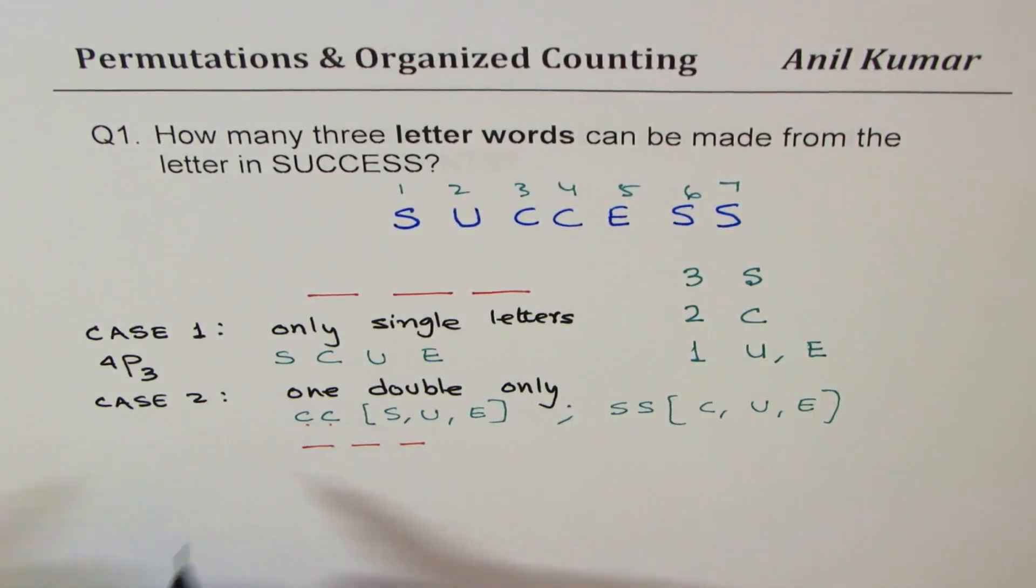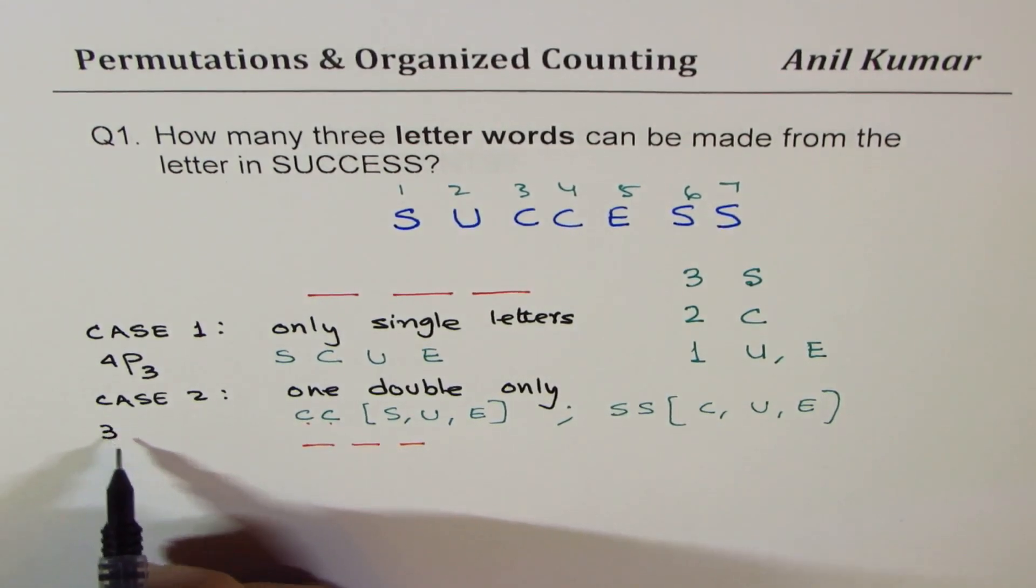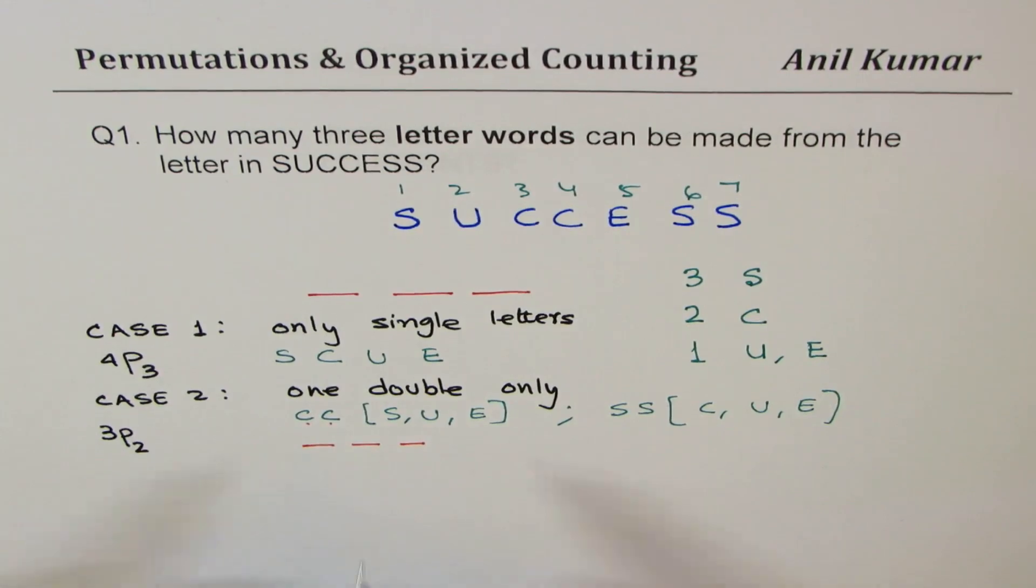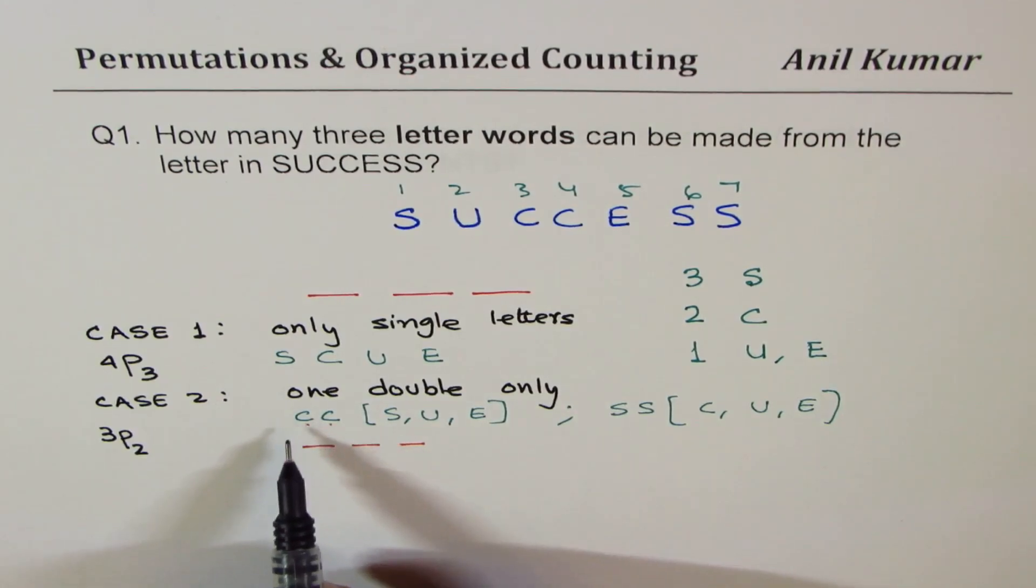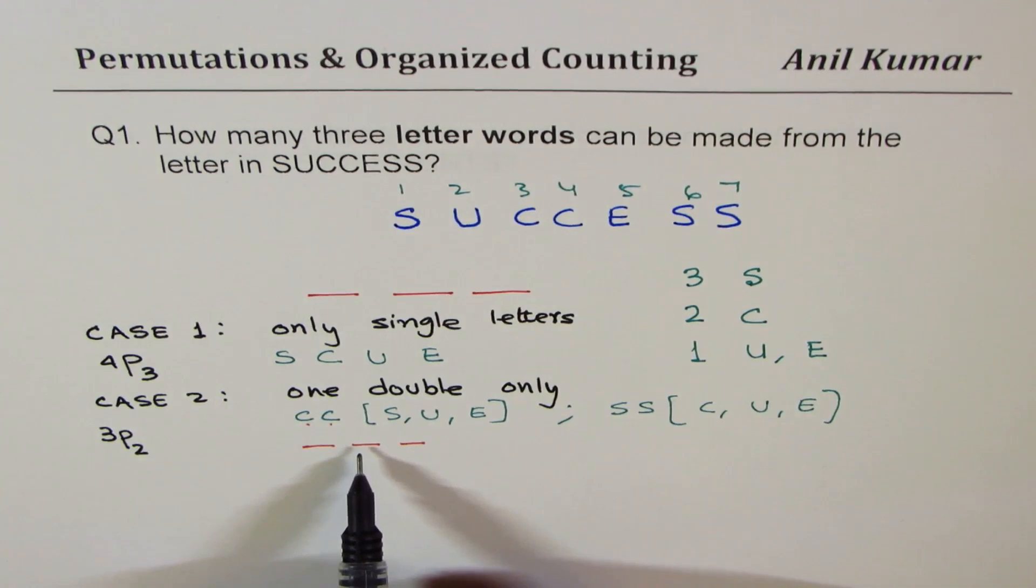So we are going to fill these three spaces with two C's first. Now how many ways can we do that? Well, two C's means there is a repetition, but we are filling these spaces. Total number of places are three, two C's to be filled, so that becomes 3P2. Correct, 3P2.